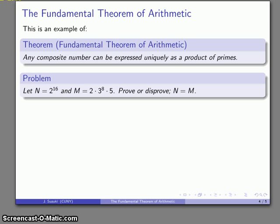So for example let's consider this problem. Let's consider two numbers. N is 2 to the 16th and M is 2 times 3 to the 8th times 5. And we want to prove or disprove that the two numbers are equal. Well, the hard way, this is just 16 2's multiplied together so I can figure out what that is. This number here is 2 multiplied by 8 3's then multiplied by 5 and I can figure out what that number is.